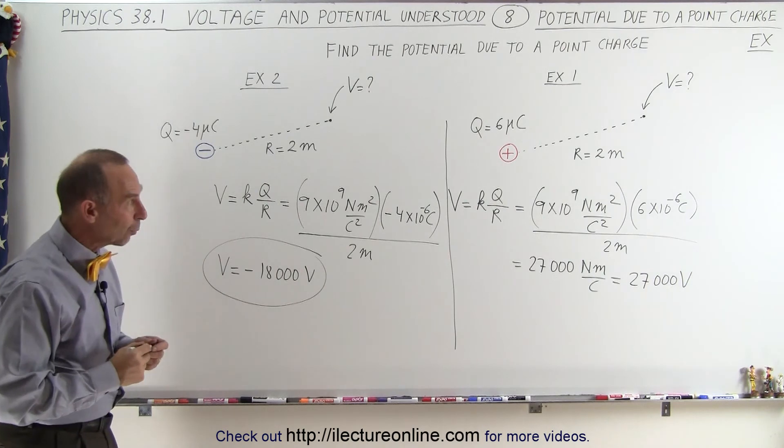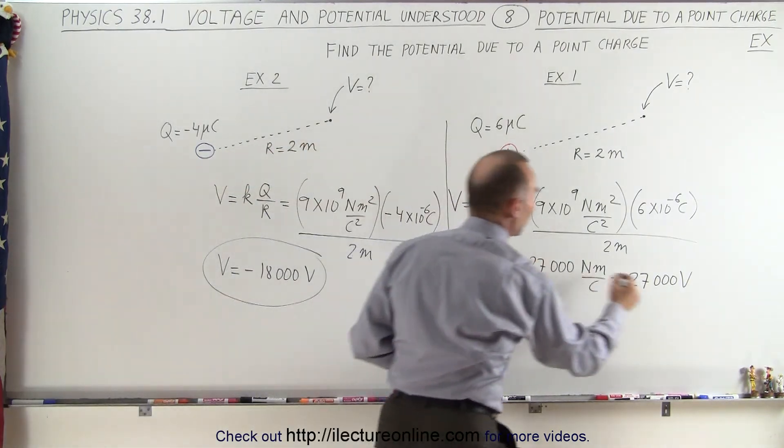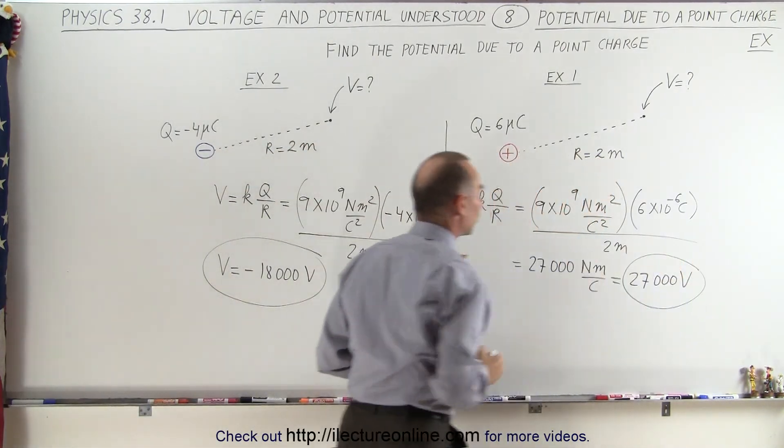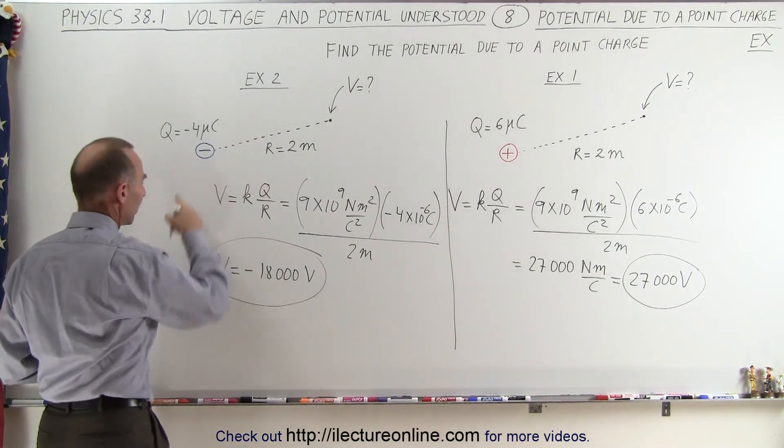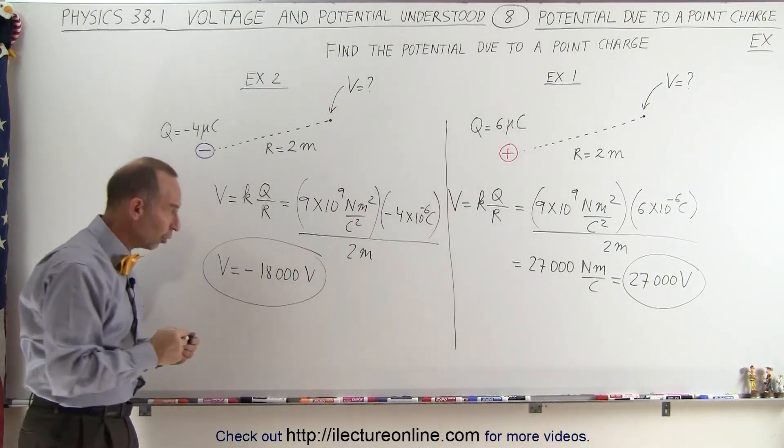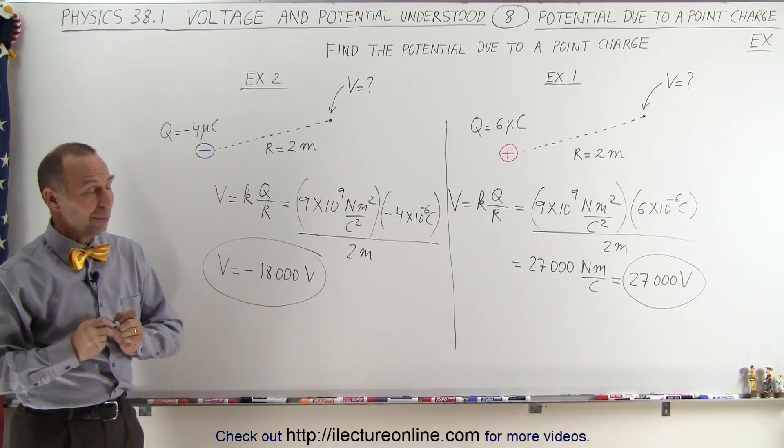So notice that when we have a positive charge, we have a positive potential or voltage. When we have a negative charge, we have a negative potential or voltage, and that's how it's done.